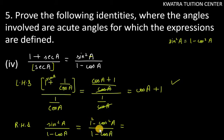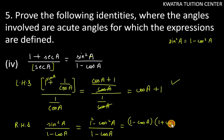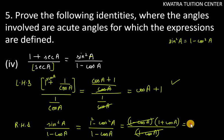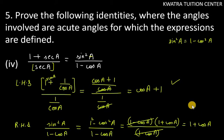1 minus cos square a — a square minus b square ko aap open kaise kar sakte ho? It becomes 1 minus cos a and 1 plus cos a. Over 1 minus cos a. Aap 1 minus cos a, 1 minus cos a ko cancel karo. You will get 1 plus cos a. So this is the answer. Aap dekh sakte ho ki right hand side aur left hand side dono match kar rahe hai. Therefore, this is the answer for the fourth part.